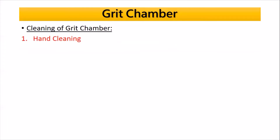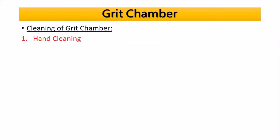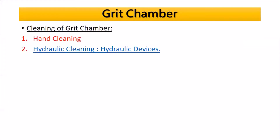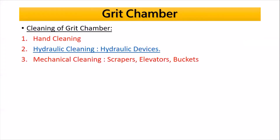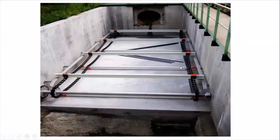Cleaning of the grit chamber involves three methods: first, hand cleaning; second, hydraulic cleaning; and third, mechanical cleaning. This is a diagram of the grit chamber showing how particulate matter settles at the bottom of the tank. This is the actual diagram in a sewage treatment plant.